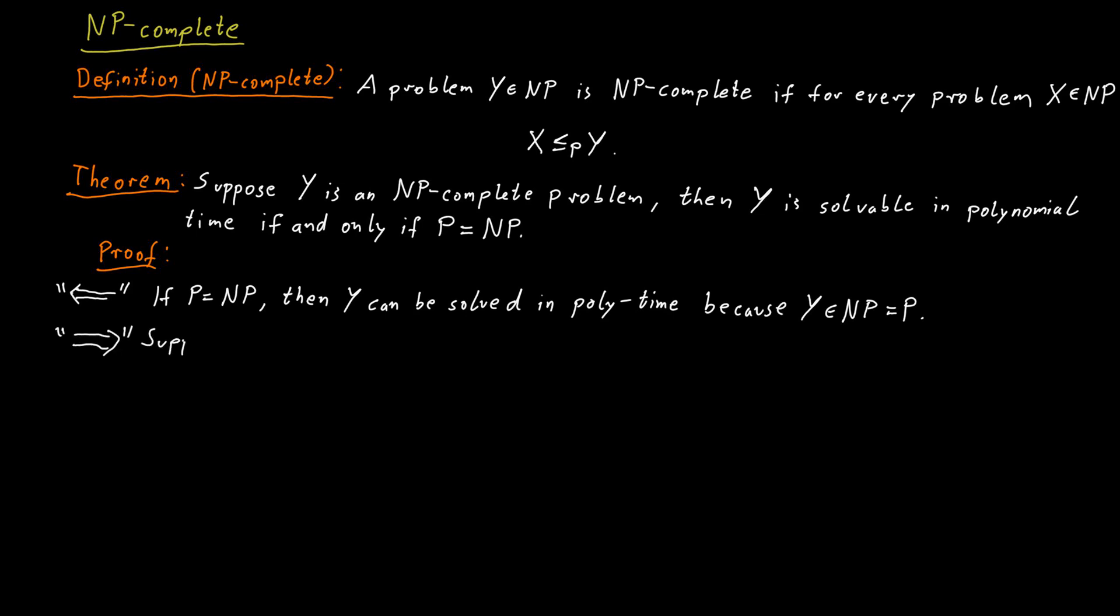For the other direction, suppose Y can be solved in polynomial time. Now we have to show that P equals NP in that case. So that we can solve every problem in NP in polynomial time.